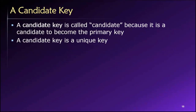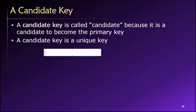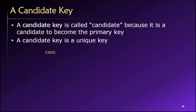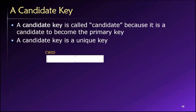So let's consider some possible ways that we might uniquely identify the people at a university. We have something called a campus-wide ID that uniquely identifies everyone. But what are some other options? Once you start thinking about this, you'll start seeing primary keys everywhere.